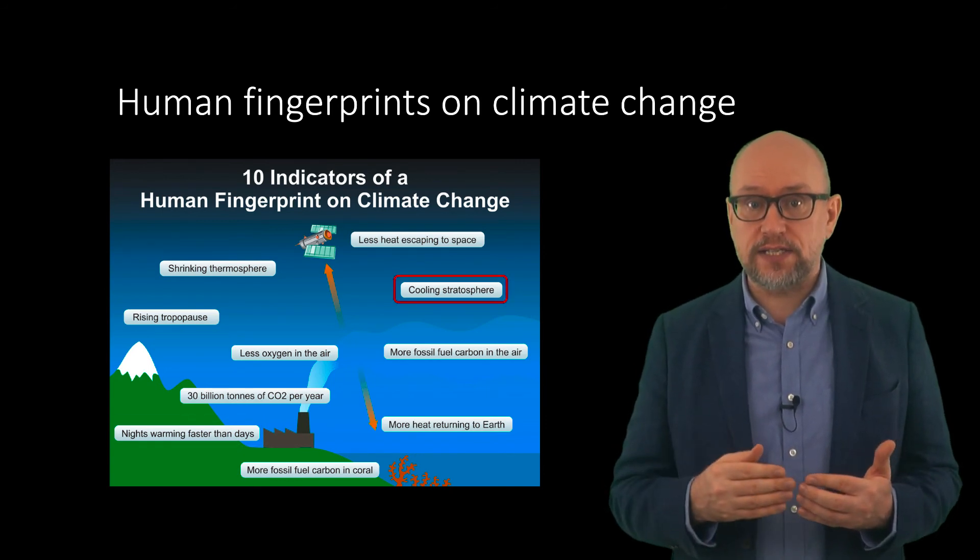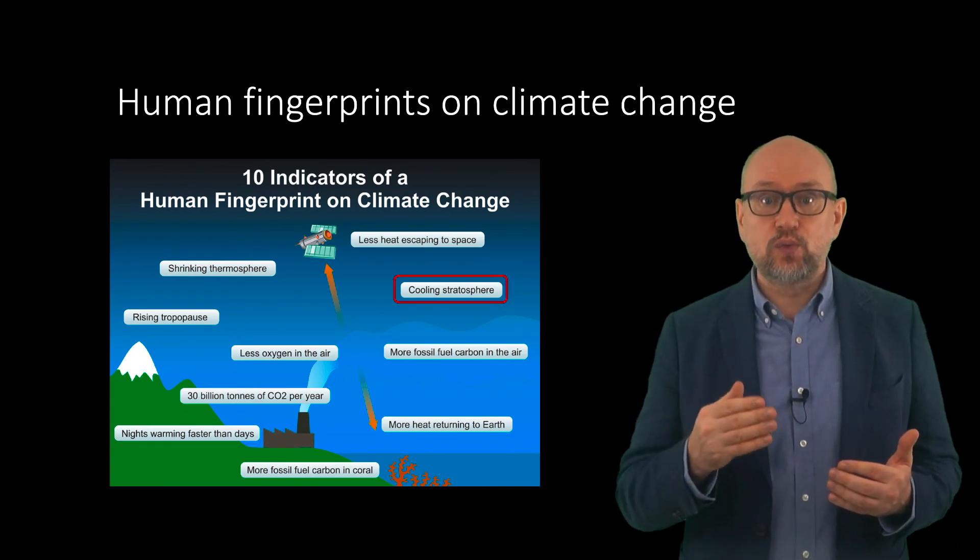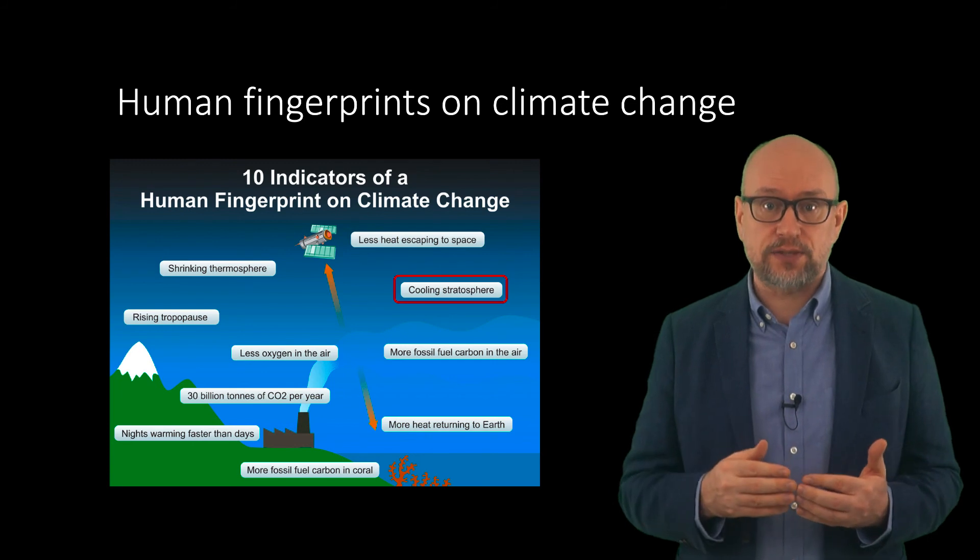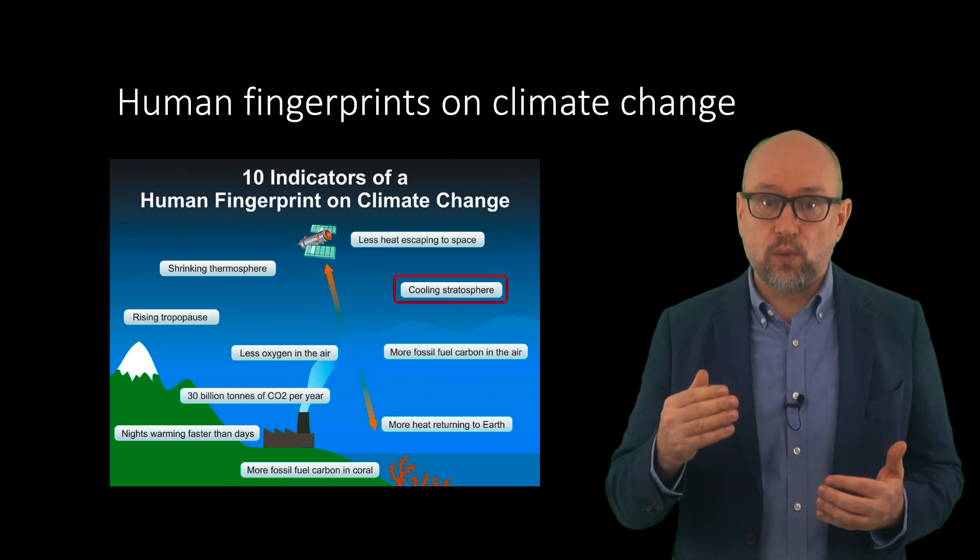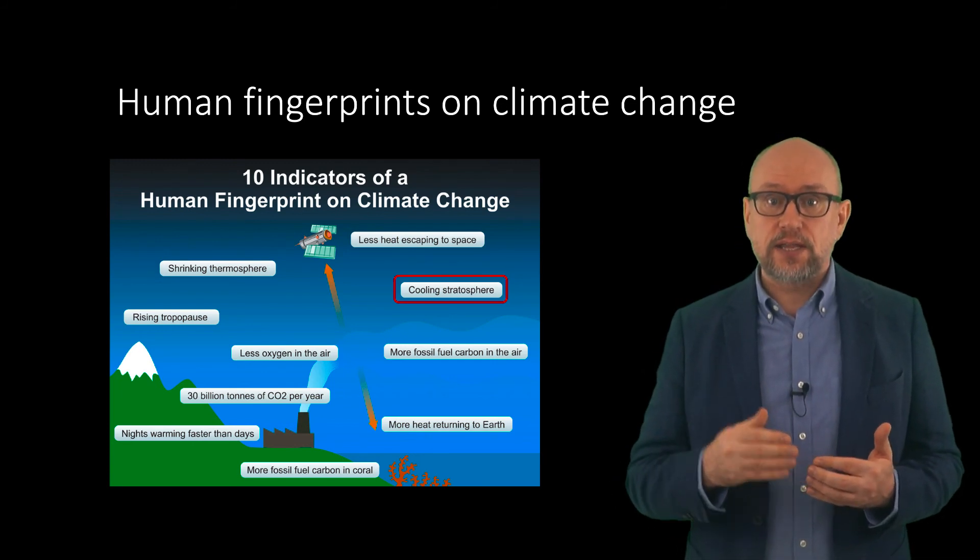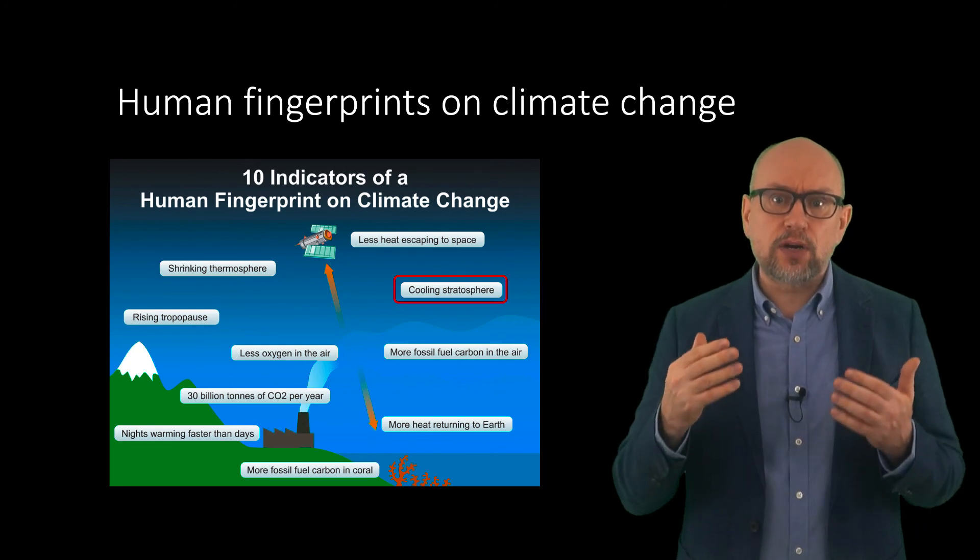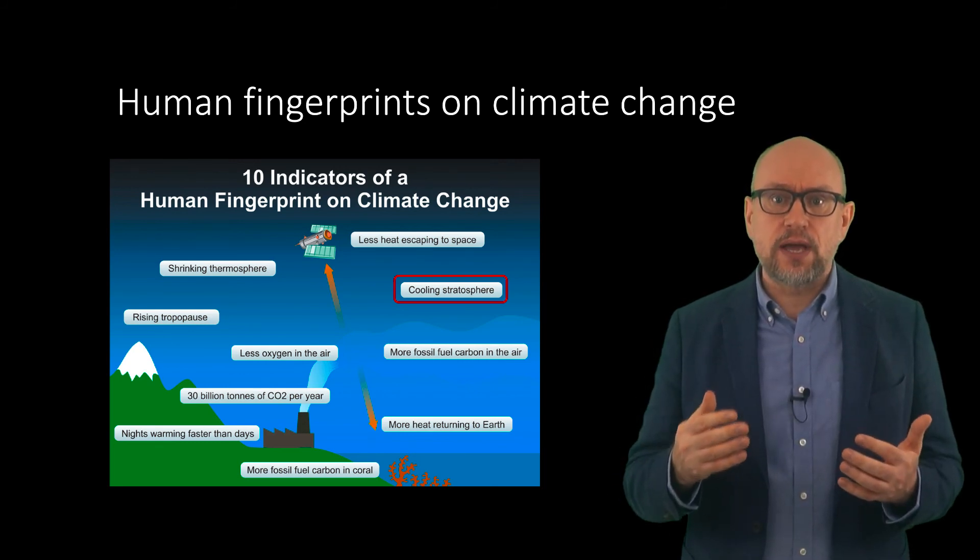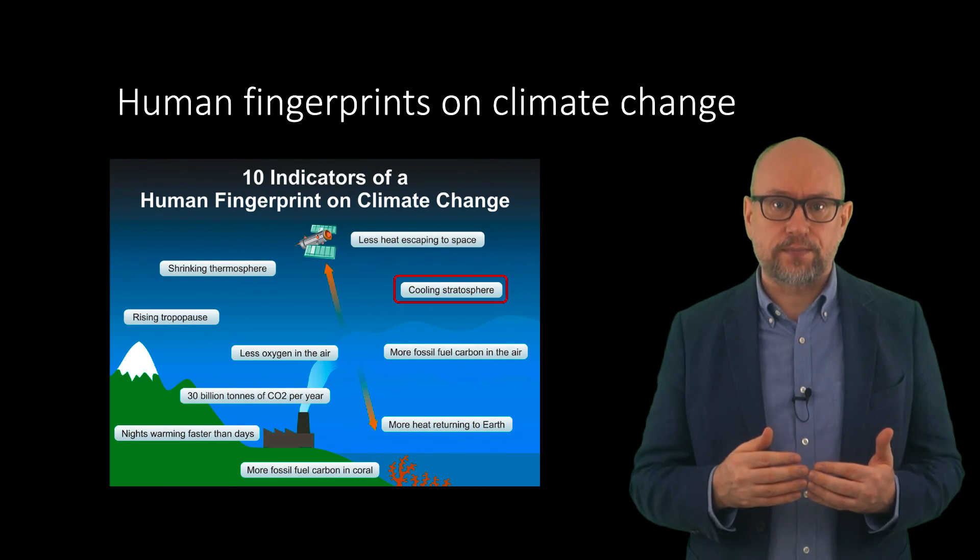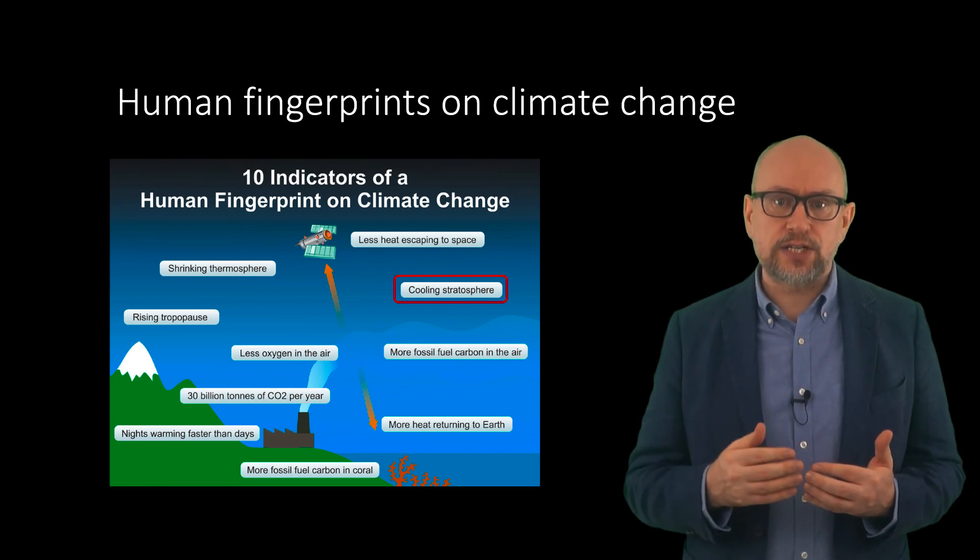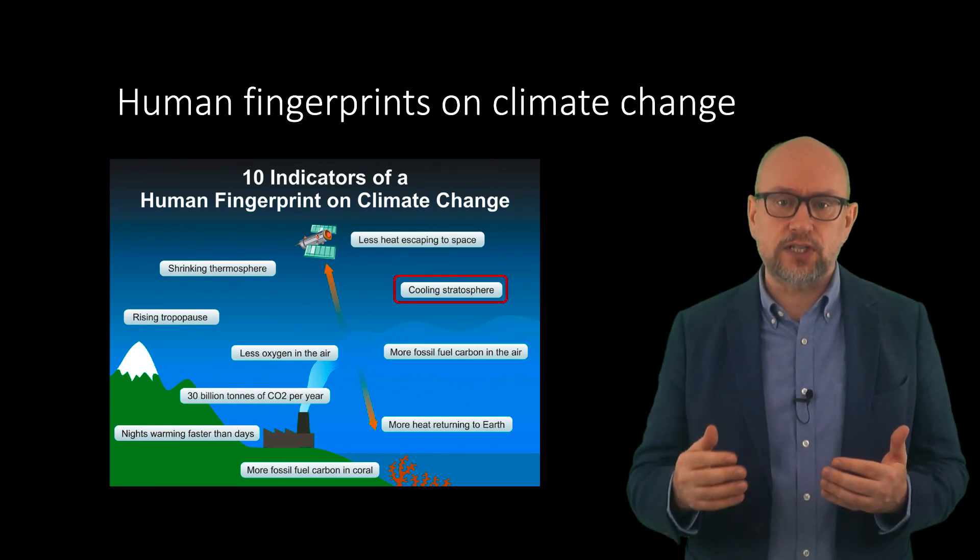Second, if the warming was due to solar activity, then the stratosphere should warm along with the rest of the atmosphere. But if the warming is due to the greenhouse effect, the stratosphere should cool because of the infrared radiation being trapped in the troposphere. Satellite measurements show that the stratosphere is cooling.